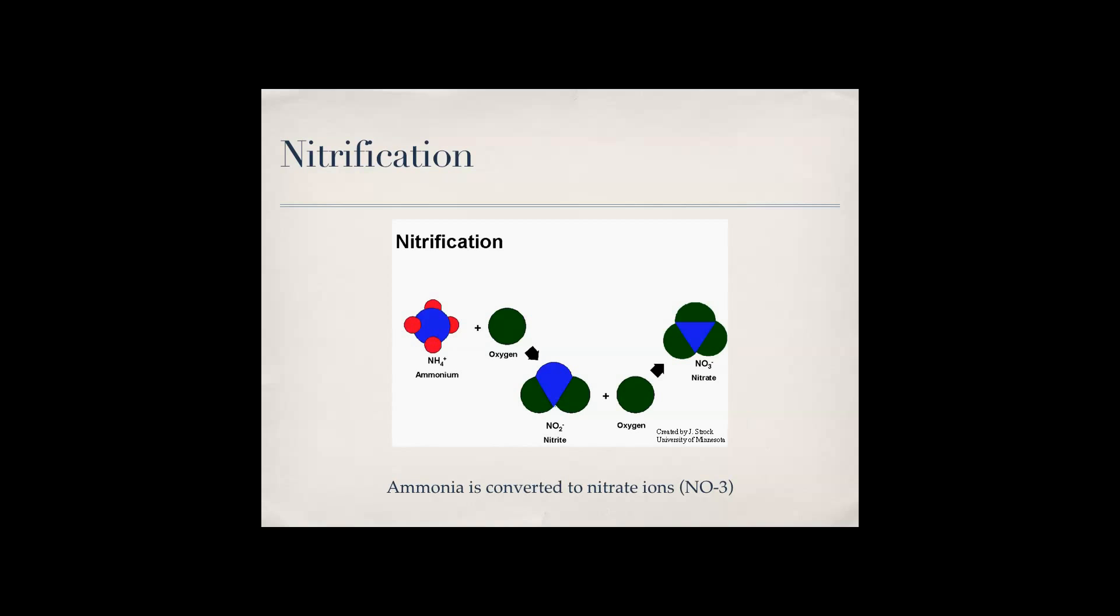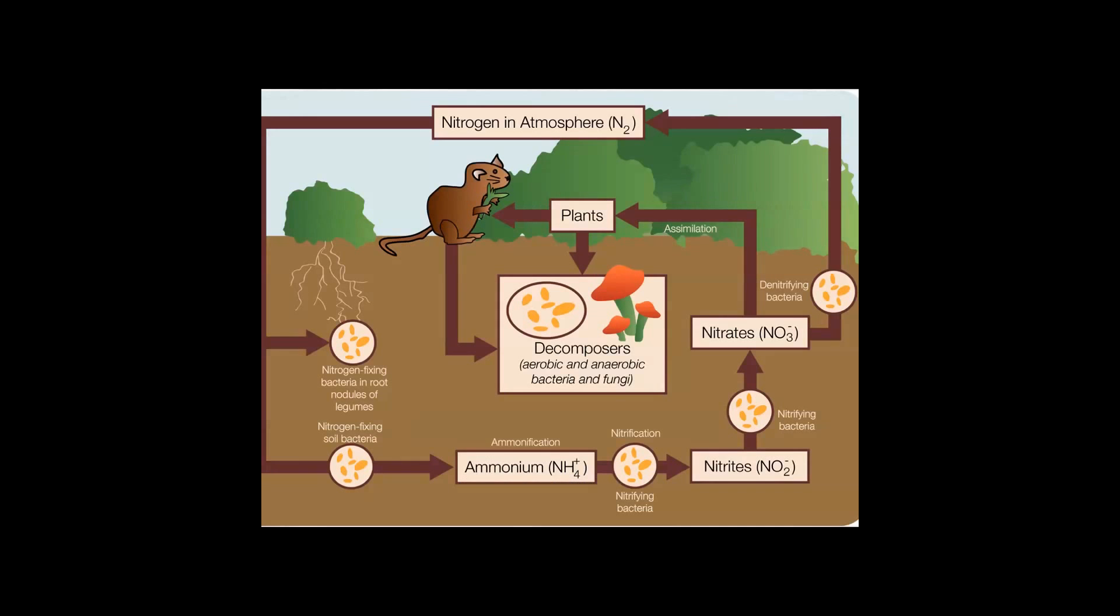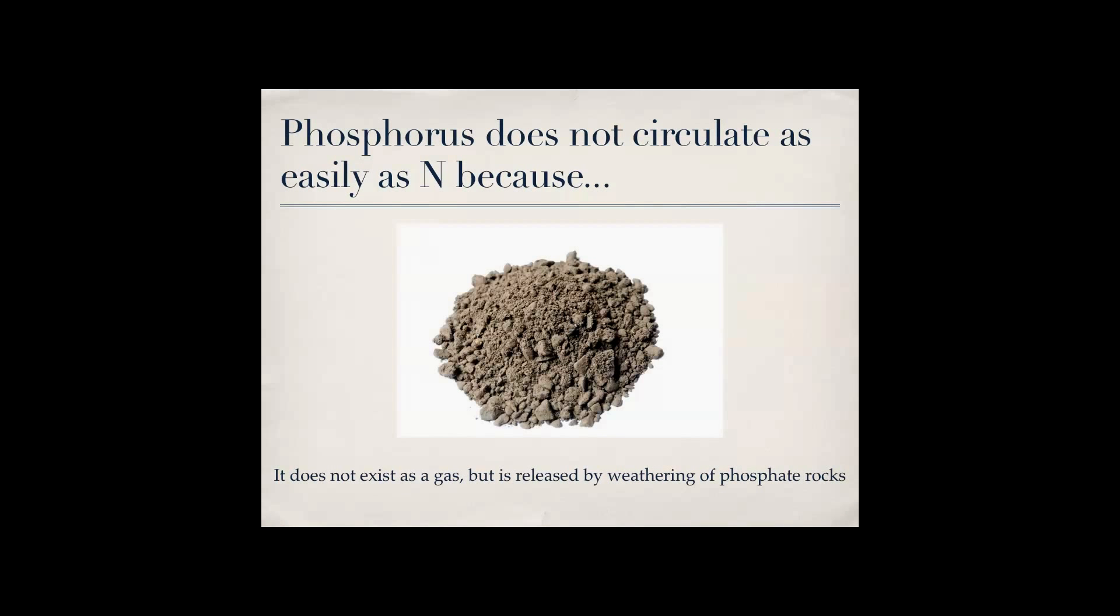Nitrification is when ammonia is converted into nitrate ions so that they can use that. And denitrification is when the ammonia turns back into nitrogen so that it can go back into the nitrogen cycle, which is shown here. You see the nitrogen in the atmosphere is fixed by bacteria, and also decomposers turn it into ammonia as well. And then nitrification happens and makes nitrates and nitrites, and then denitrification is when it goes back into the atmosphere.